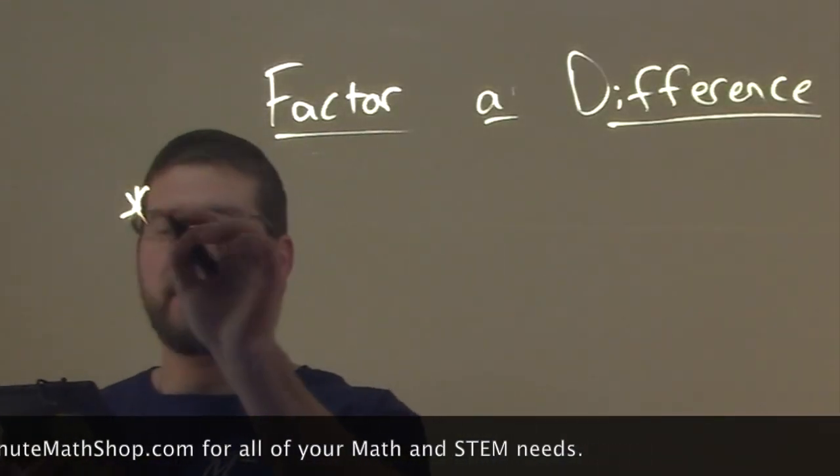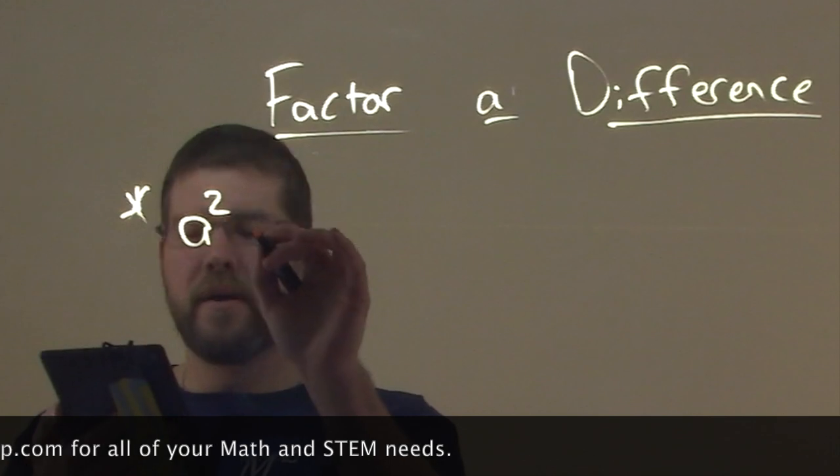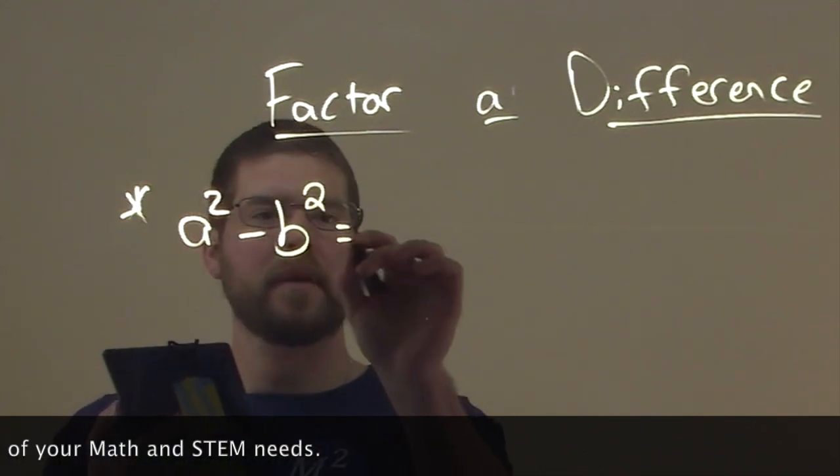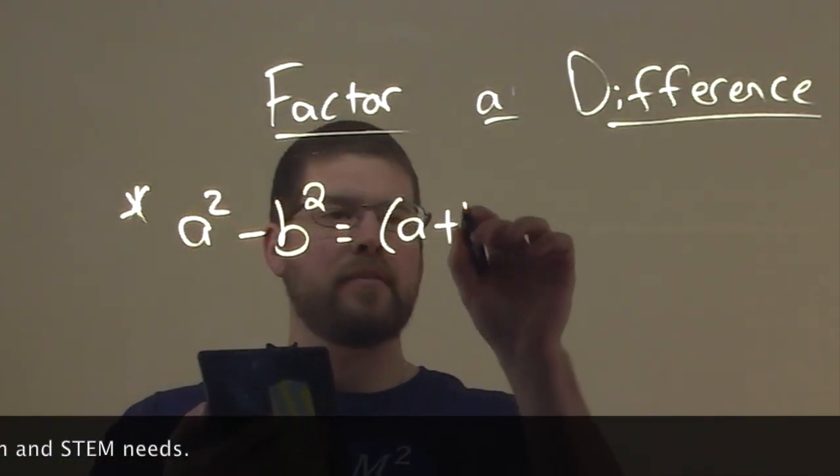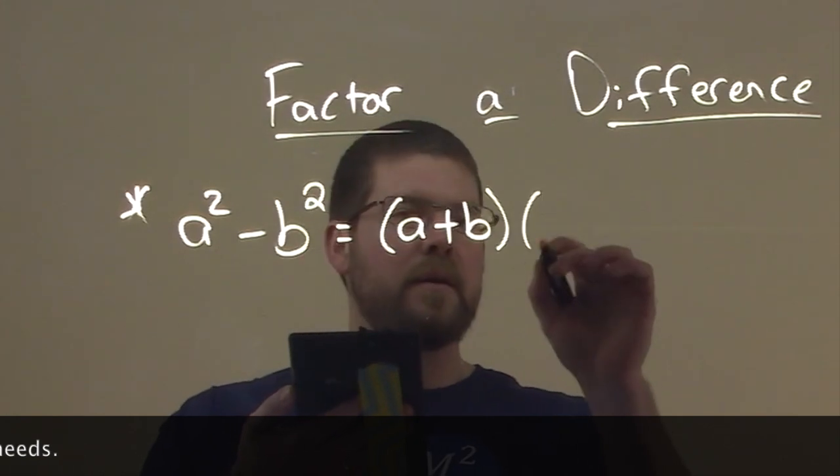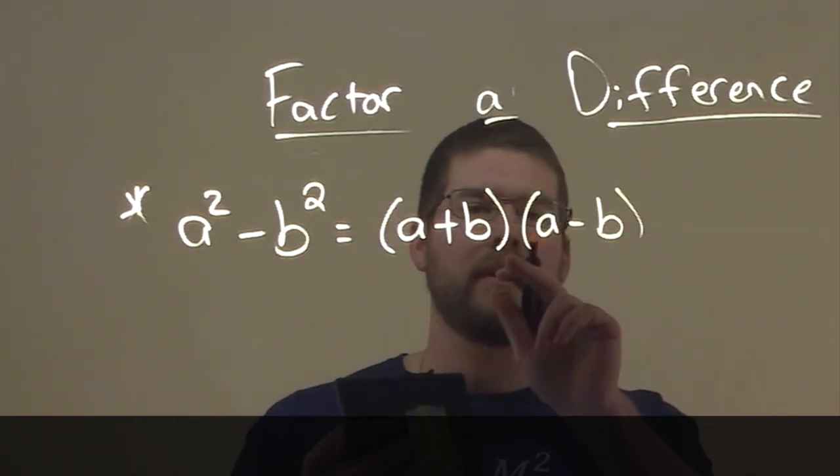So in a nutshell, we have it as such: a squared minus b squared is equal to a plus b, a minus b, being multiplied.